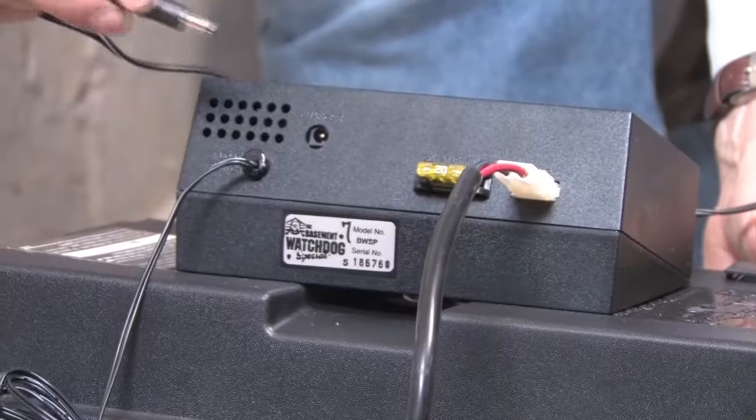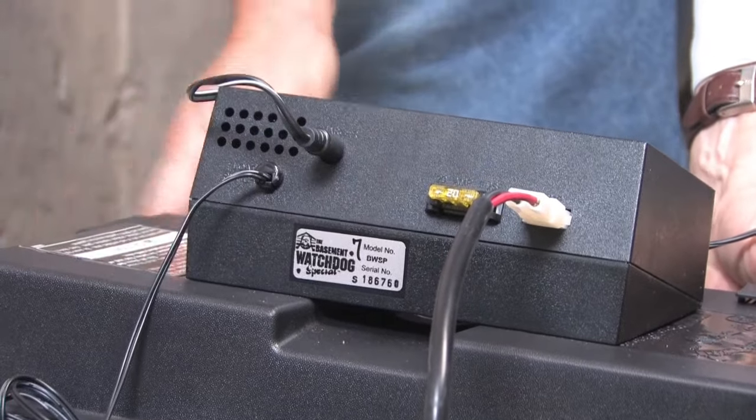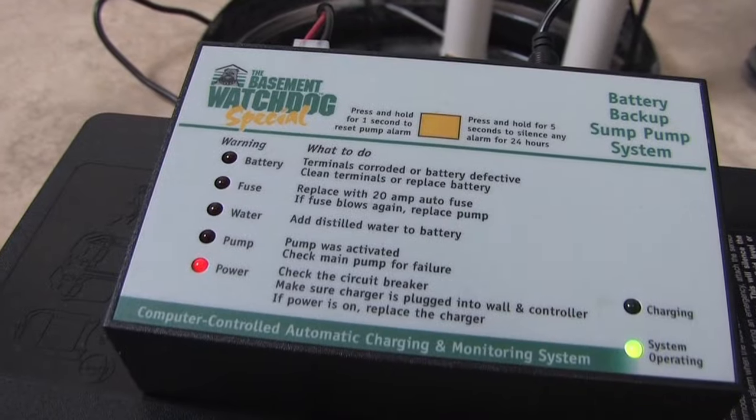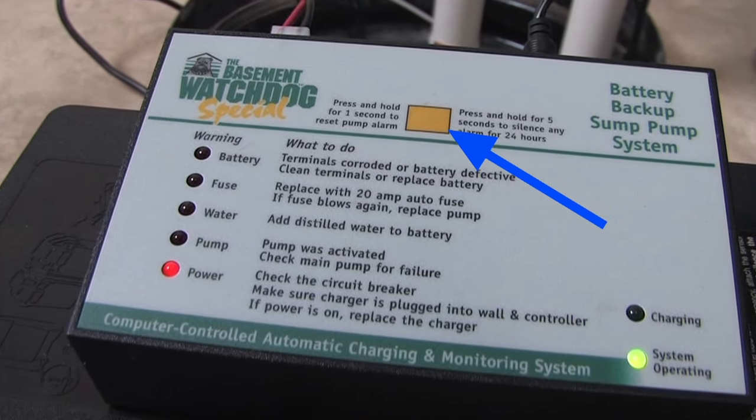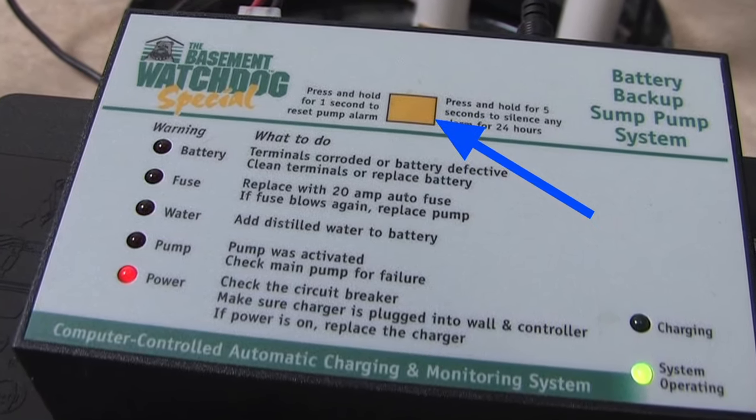Press it firmly into the back of the control unit, then into an AC outlet on the wall. If the pump alarm is sounding, press the yellow button on the front of the control panel to reset the alarm.